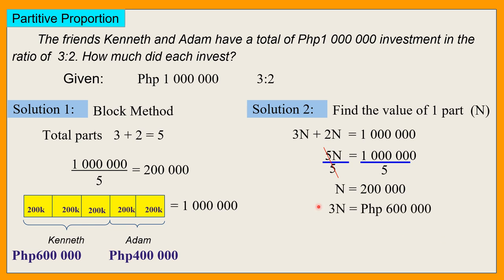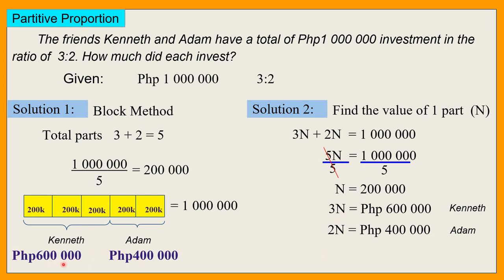So 3N is equal to 600,000 — kasi 3 times 200,000 is 600,000 — that is for Kenneth. And 2N is 400,000 — that is for Adam. So pareho lang sagot natin dito — block method man o N-method ang gagamitin.